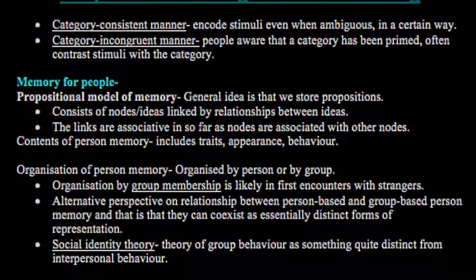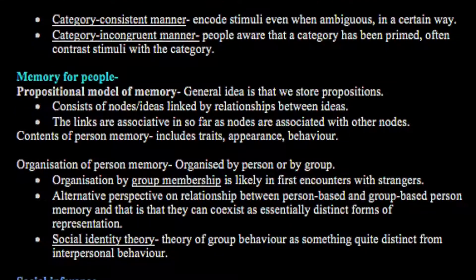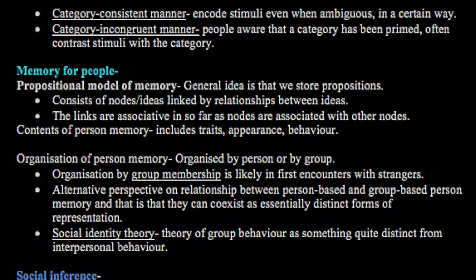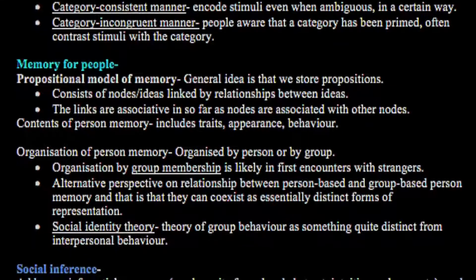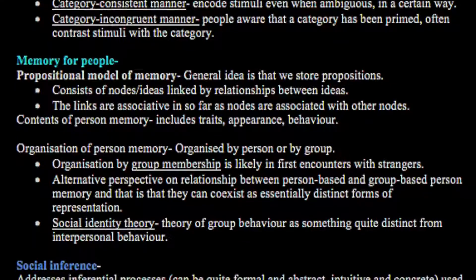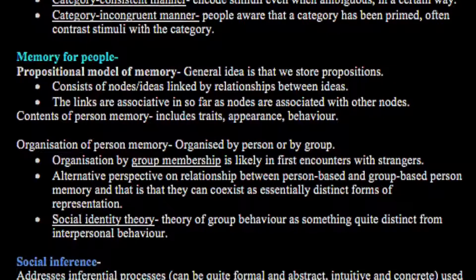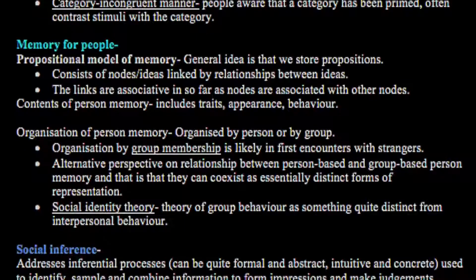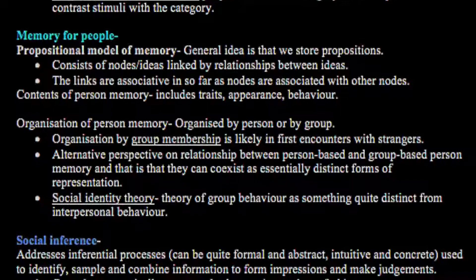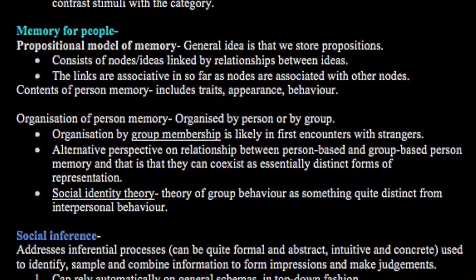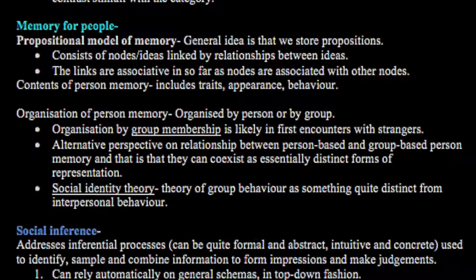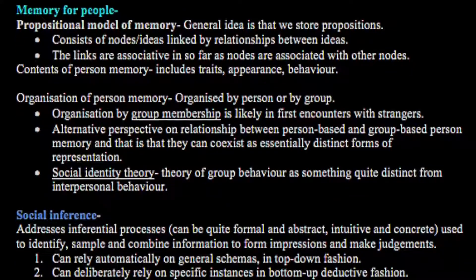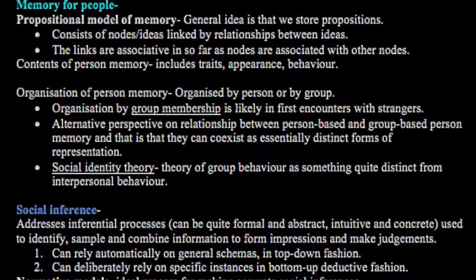Memory for people: there is a propositional model of memory, which holds that we store propositions consisting of nodes or ideas linked by relationships. These links are associative, insofar as nodes are associated with other nodes, and their contents include traits, characters, and behaviours of other people, as well as group membership — as discussed in Social Identity Theory.